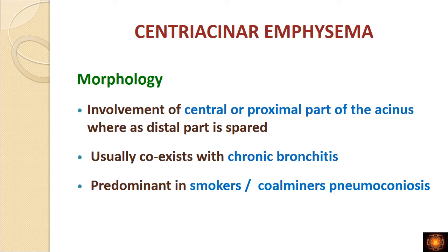Centriacinar emphysema: as the name suggests, the central or proximal part of the acinus is involved. Distal to the terminal bronchiole we have the respiratory bronchiole, which opens into the alveolar duct, which opens into the alveolar sac. In centriacinar emphysema, only the respiratory bronchioles are dilated while the distal part — alveolar ducts and alveolar sacs — remains normal. This type occurs as a consequence of chronic bronchitis and is more common in smokers and coal workers with pneumoconiosis.